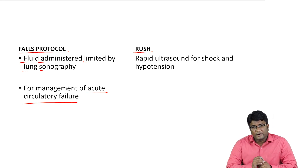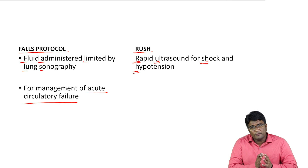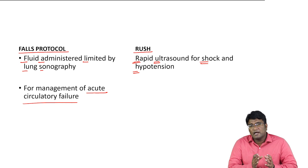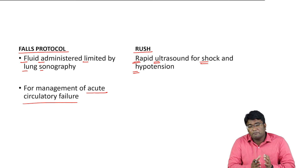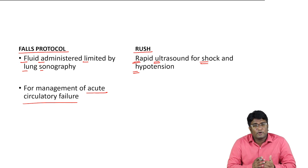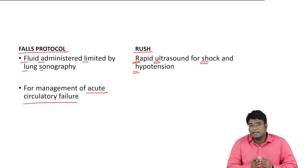RUSH protocol stands for Rapid Ultrasound for Shock and Hypotension. In cases of shock and hypotension, we evaluate the pericardium, heart, and inferior vena cava to understand the cause. In summary: FAST = Focused Assessment with Sonography for Trauma; FALSE = Fluid Administered Limited by Lung Sonography; RUSH = Rapid Ultrasound in Shock and Hypotension; POCUS = Point-of-Care Ultrasound; BLUE = Bedside Lung Ultrasound in Emergency.